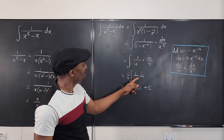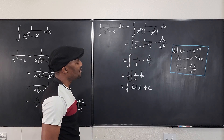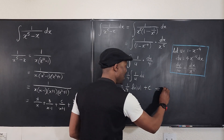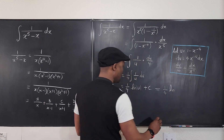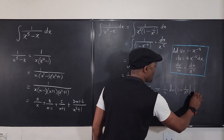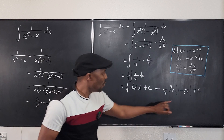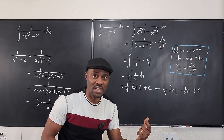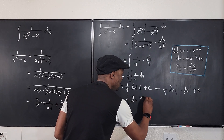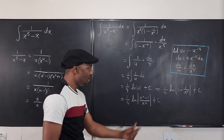Now what did we say u was? u was 1 minus x to the negative 4. I want to write it in the other form, so this is going to be 1 over 4 times the natural log of 1 minus 1 over x to the fourth, plus C. If you leave your answer like this, this is fine. But if we collect like terms and make it into a single rational expression, this is 1 over 4 times the natural log of x to the fourth minus 1 over x to the fourth, plus C.